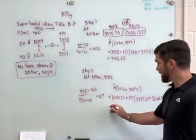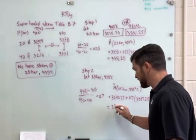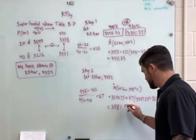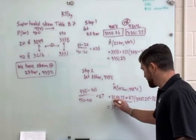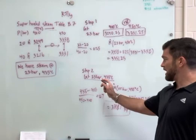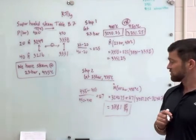Okay. And if I go ahead and do that math, I end up getting 3318.1 kilojoules per kilogram. And this again is my value for the enthalpy at 25 bar and 435 degrees Celsius.